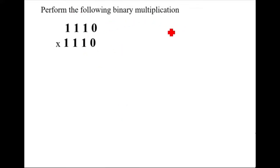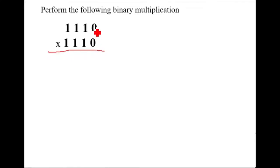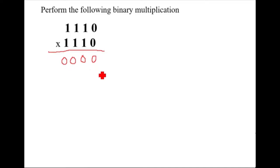Now let's do the binary multiplication. The question is 1110 × 1110. We will start from the LSB, so this zero will be multiplied with all these values, making all zeros — zero, zero, zero — just as we do in simple mathematics. Only the addition will matter.